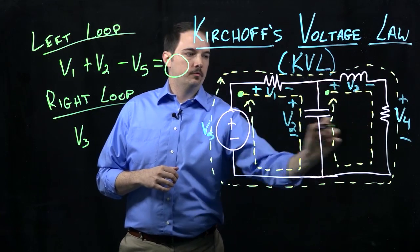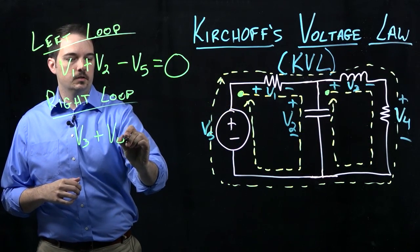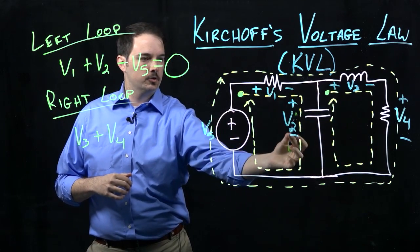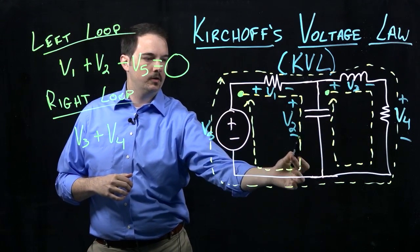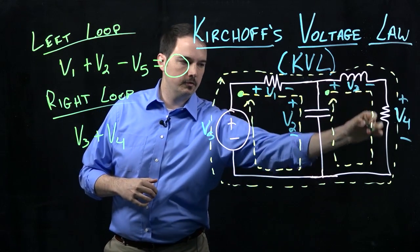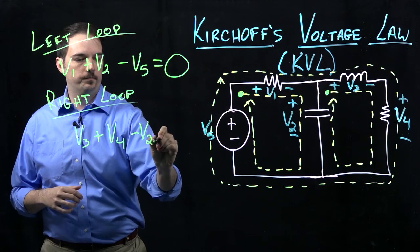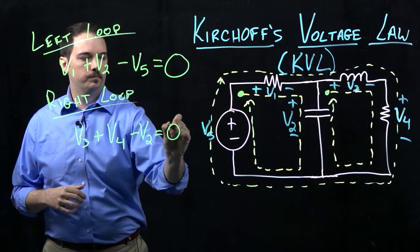Now I have voltage drop V4, that's a drop, so I'm going to say that's a positive quantity. And then I come up here through this capacitor, which is I've defined the voltage V2, but going from minus to plus because I have to follow the direction of this loop. So that's going to be a minus V2 now equals to zero.